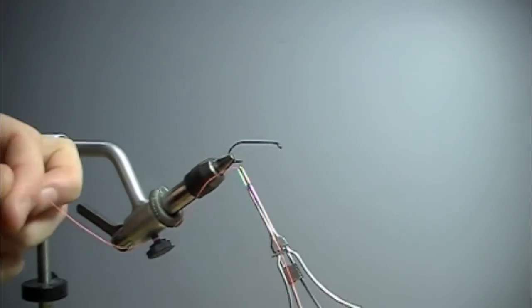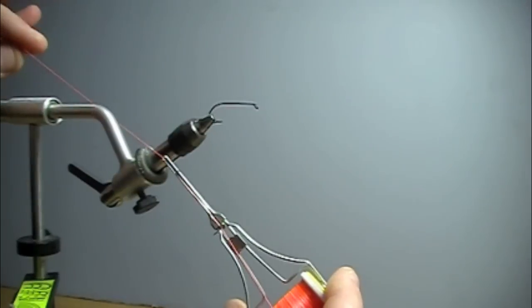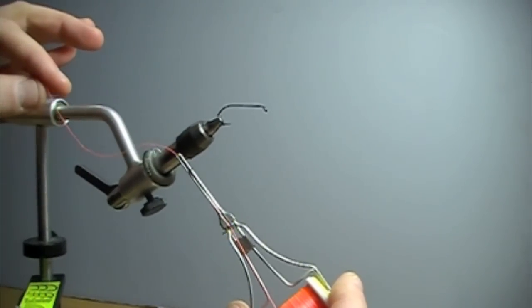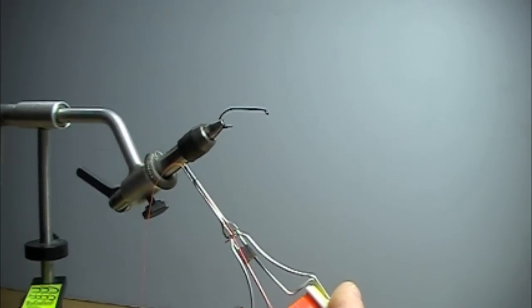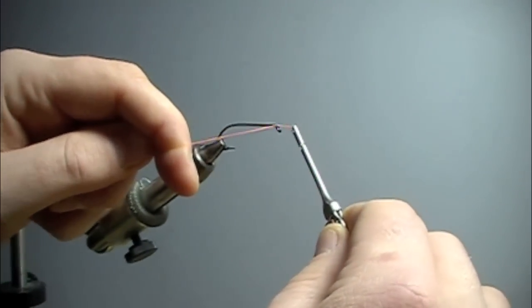So what I have here is a bobbin and my thread is extended through the tube. I'm going to hold the thread with my left hand, or non-dominant hand I guess is a better way to put it for you out in TV land. And when I start the thread...